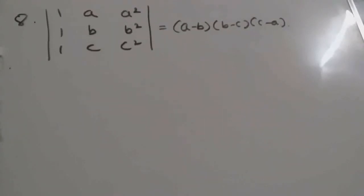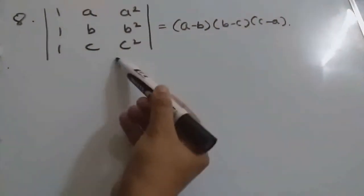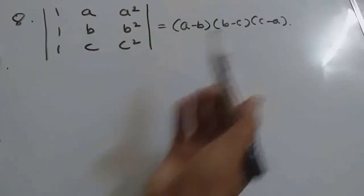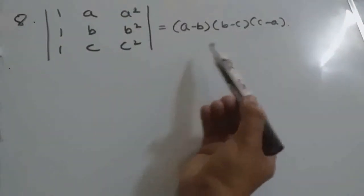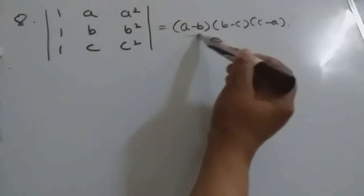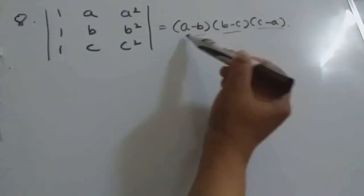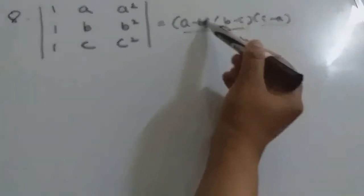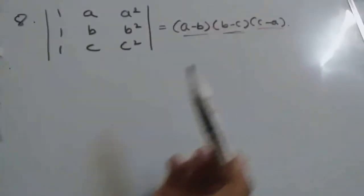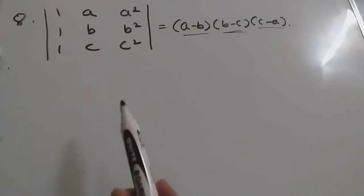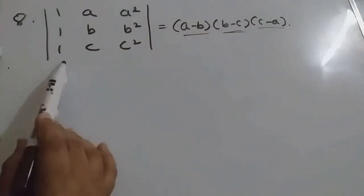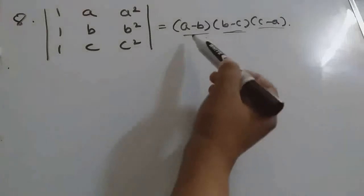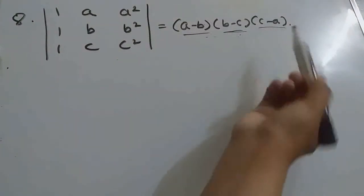Question 8 is: this determinant is equal to this expression, and we should show it. We have to observe the right hand side also. In the right hand side we have 3 brackets: A minus B, B minus C, and C minus A. So we have to observe from this determinant from which row or column operation we can get these expressions.